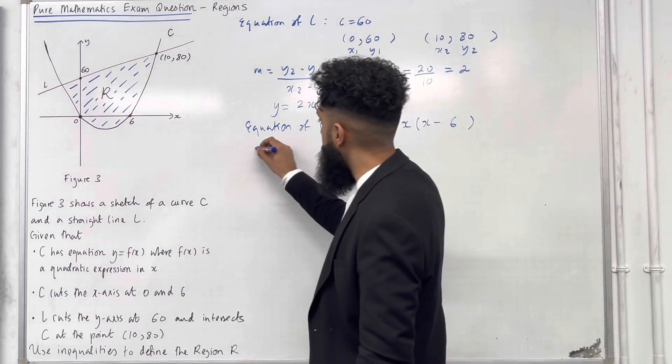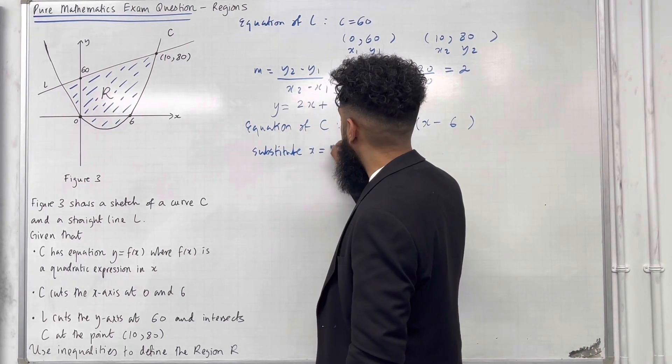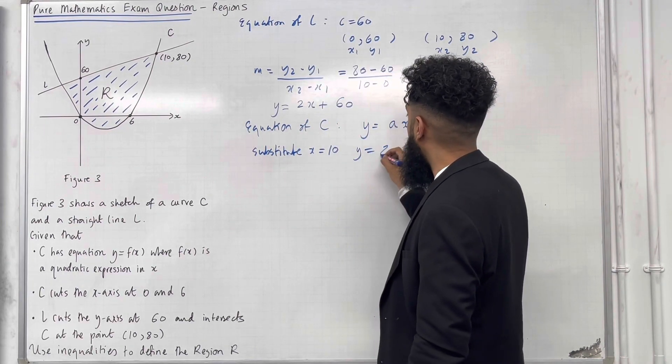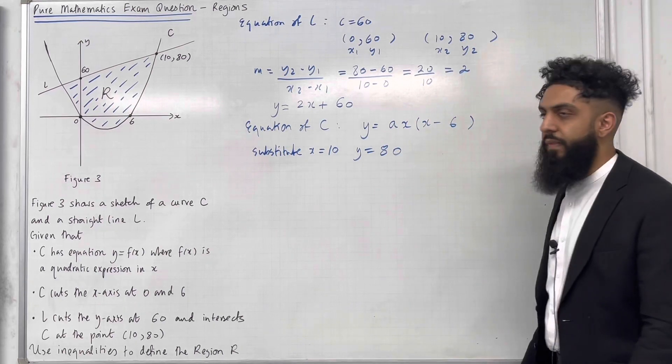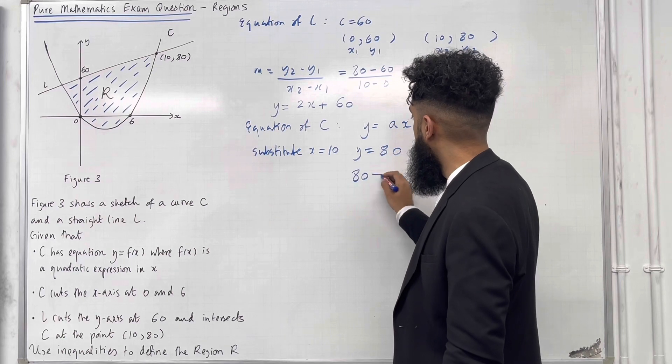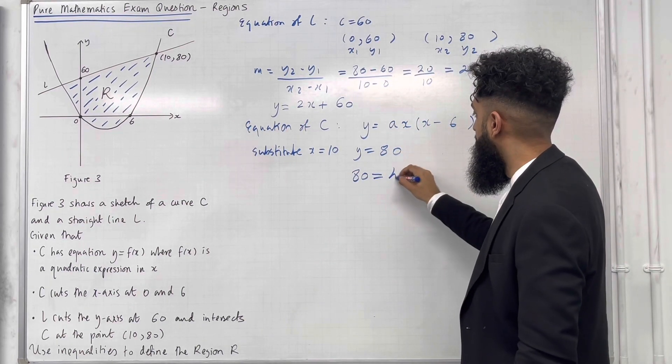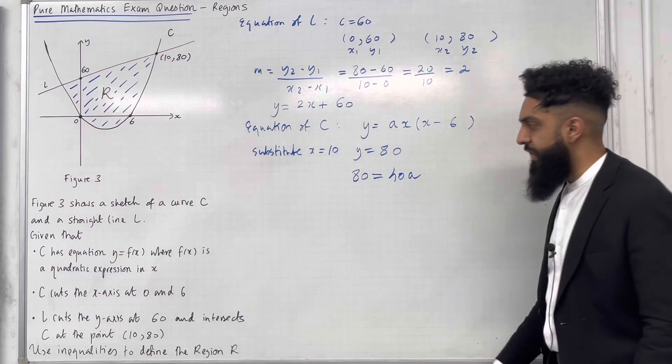So I'm going to substitute X equal 10 and Y equal 80 in order to find the scale factor A. So I've got Y equal 80. If I put X equal 10 into the right hand side I get precisely 40A after simplifying.